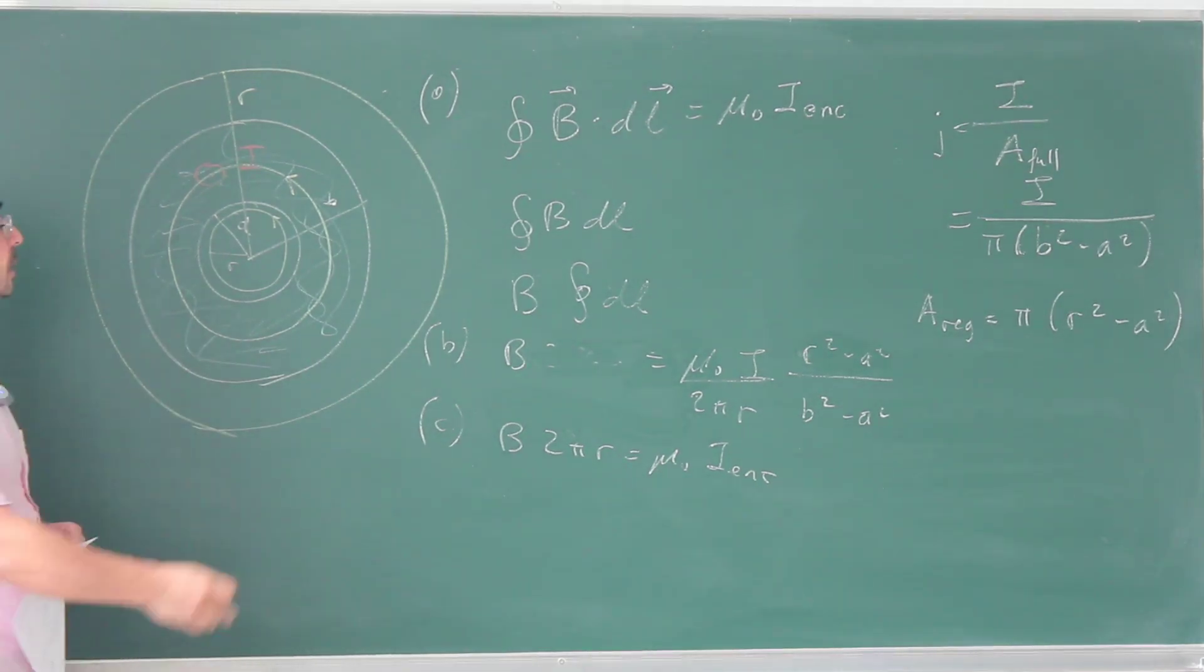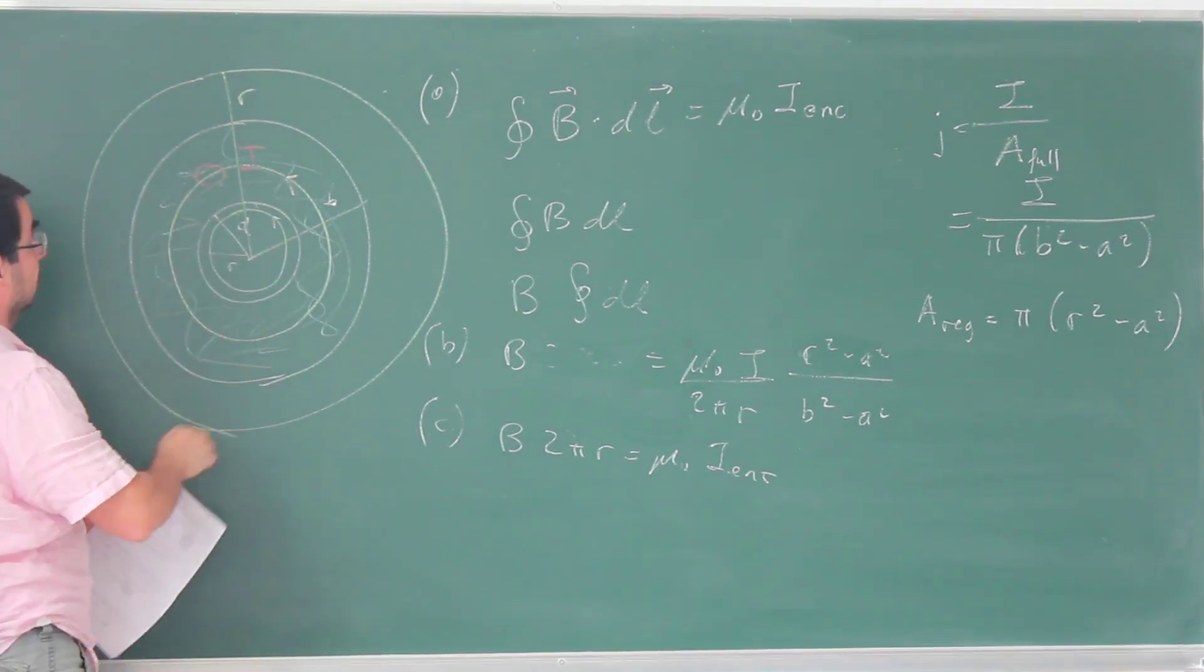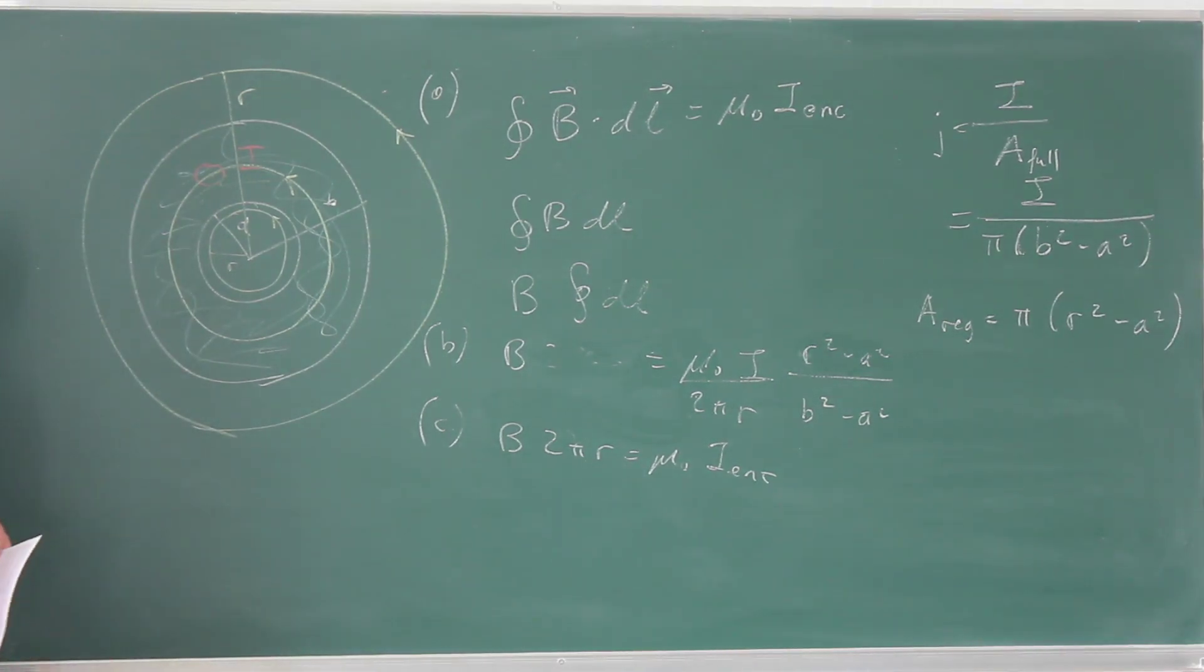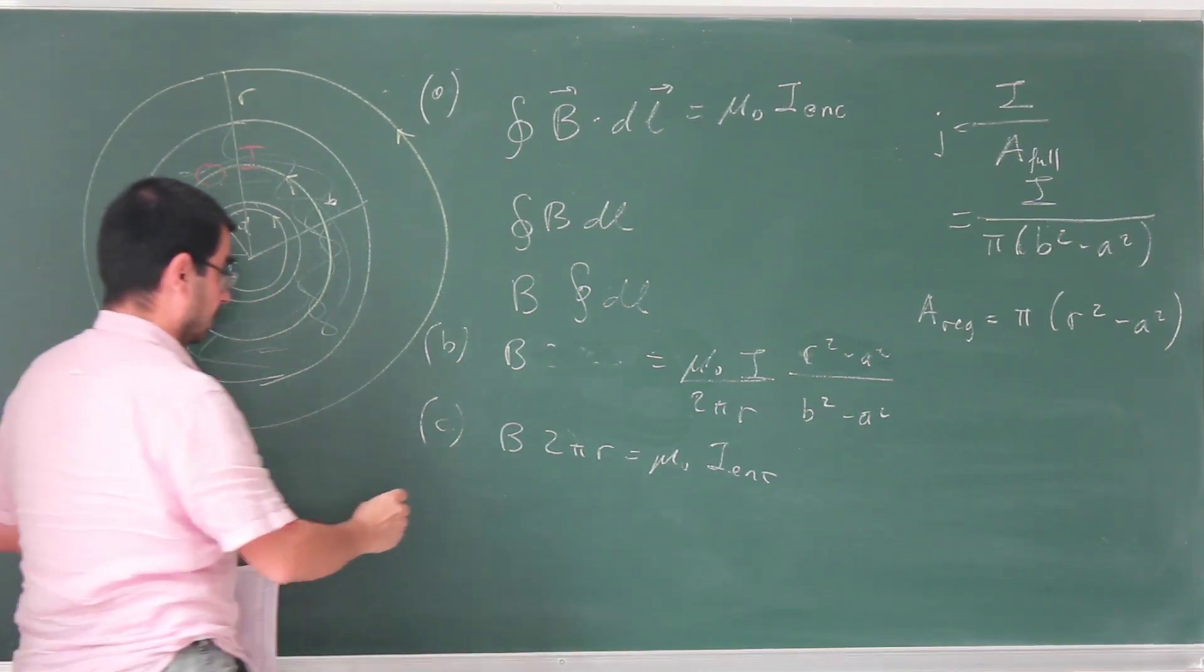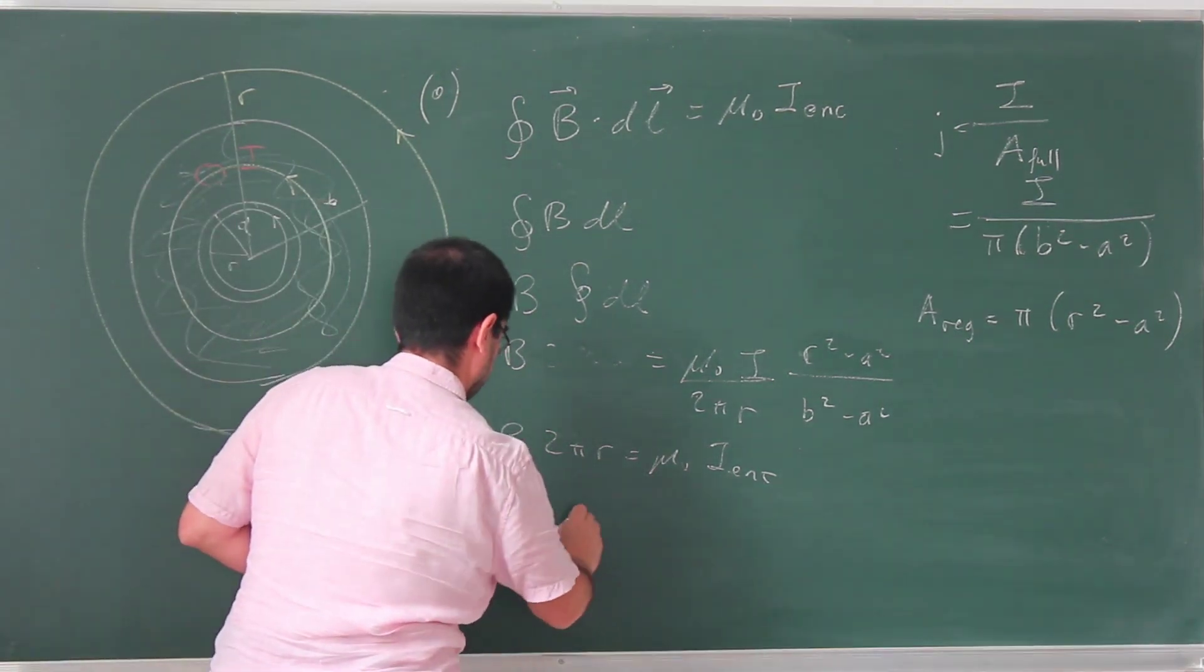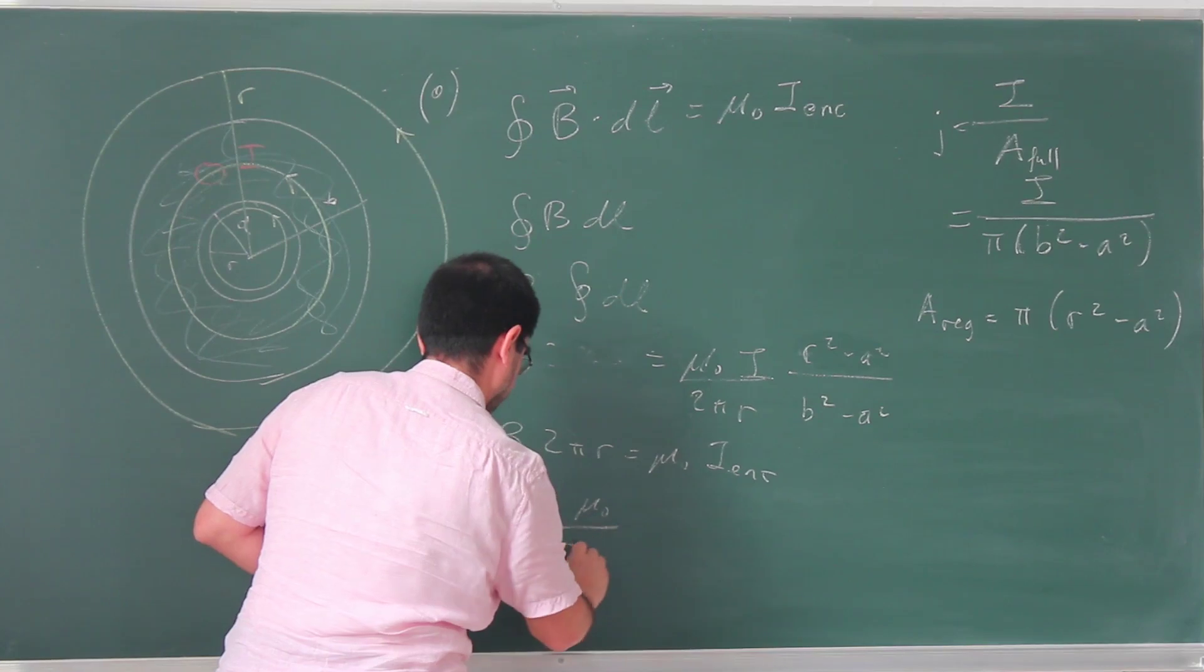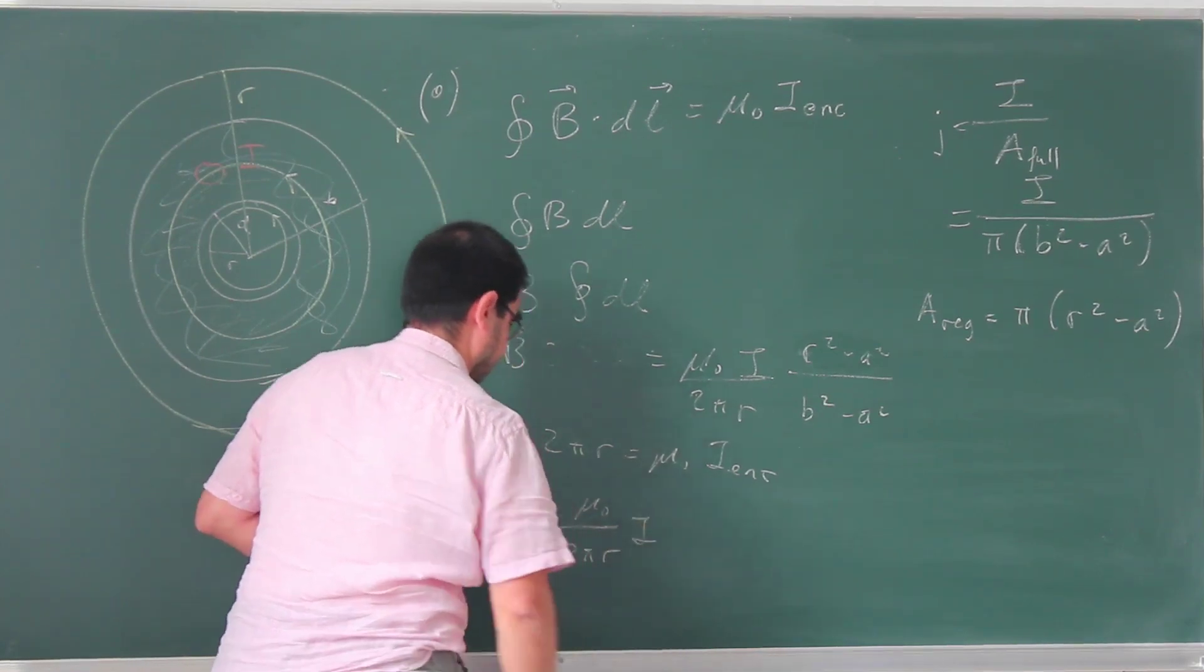This Amperian loop, again, take it this way, is going to have the total current that's in the problem. That's just I, so our magnetic field is μ₀ over 2πr times I.